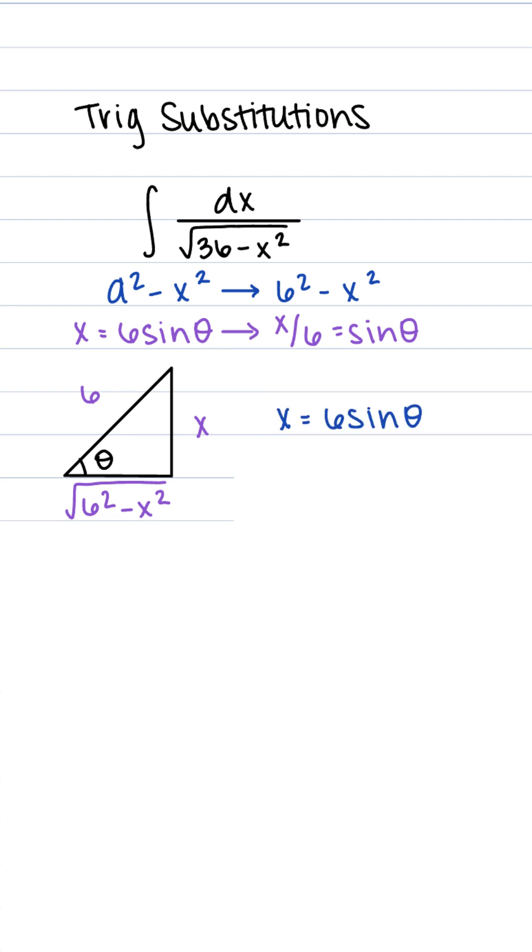So we have our x, but we also need to find our dx. By taking the derivative of both sides in terms of x, we get 1 equals 6 cosine theta times d theta over dx, and we can multiply by that dx over in order to get our dx.